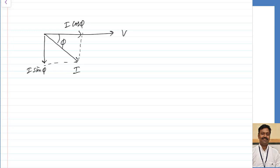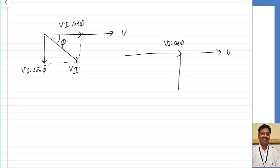Now, multiplying this current with voltage V: the in-phase component becomes V·I·cos φ, and the out-of-phase component becomes V·I·sin φ, while the total becomes V·I. So summarizing: this is my voltage, this component becomes V·I·cos φ, this component becomes V·I·sin φ, and this component becomes V·I. This is my angle phi.